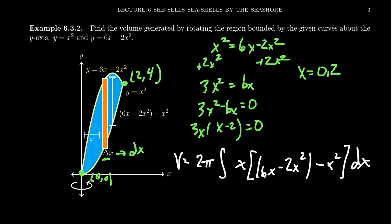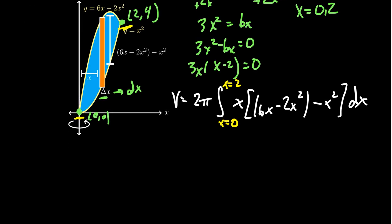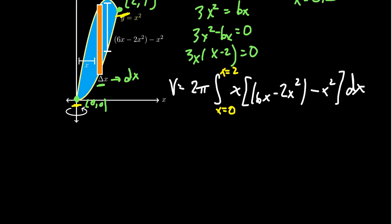Since we're integrating with respect to x, we need to find bounds for which x varies from. The smallest we get is at x equals 0. The largest we get is at x equals 2. And so now we're ready. We've set up this integral. We're now ready to simplify it and compute the volume.